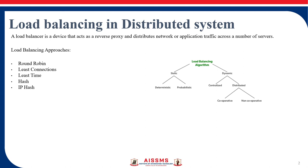So here we have seen round robin and least connection — these are the different approaches. In least connection, it checks which server has fewer connections open at that particular time and then sends traffic to those servers. Then we have weighted least connection. If we are considering response time, we also have weighted response time.